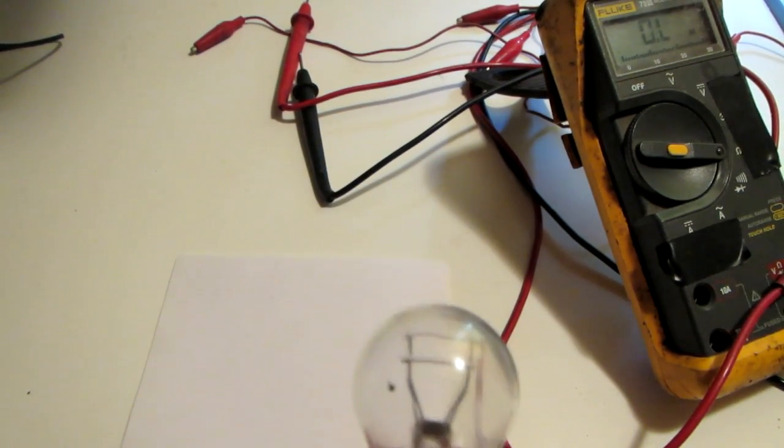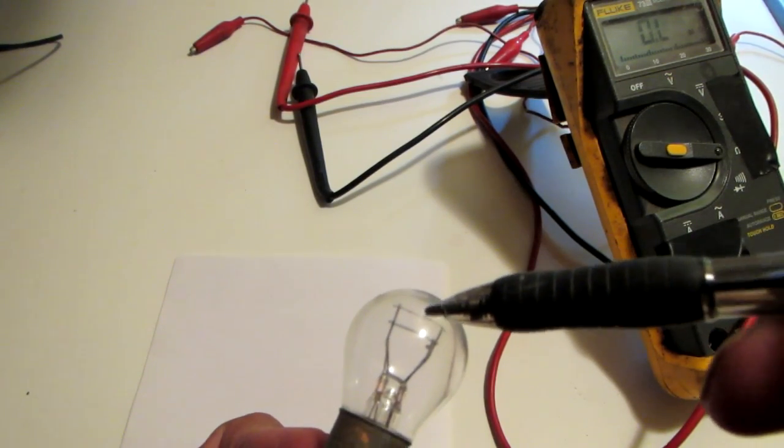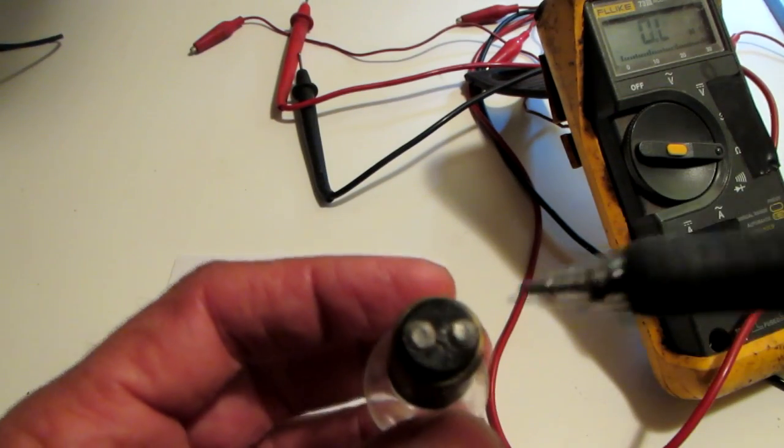Here I'm going to demonstrate how to check out a dual filament light bulb. This is your typical automobile bulb.